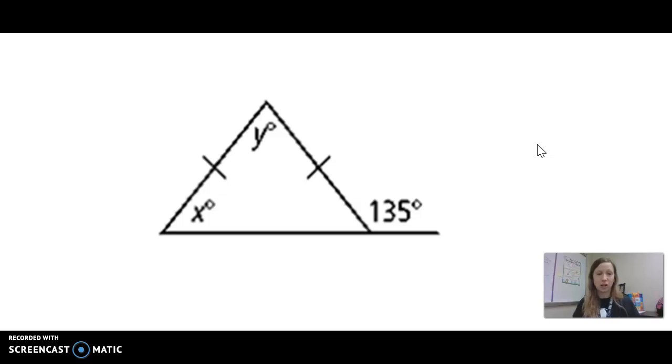We do know an exterior angle of 135 degrees. So first let's note that this angle and this angle are congruent because we have two sides that are equal, therefore we have two angles that are equal. Whatever this angle is, x will also be it. These two angles are congruent.